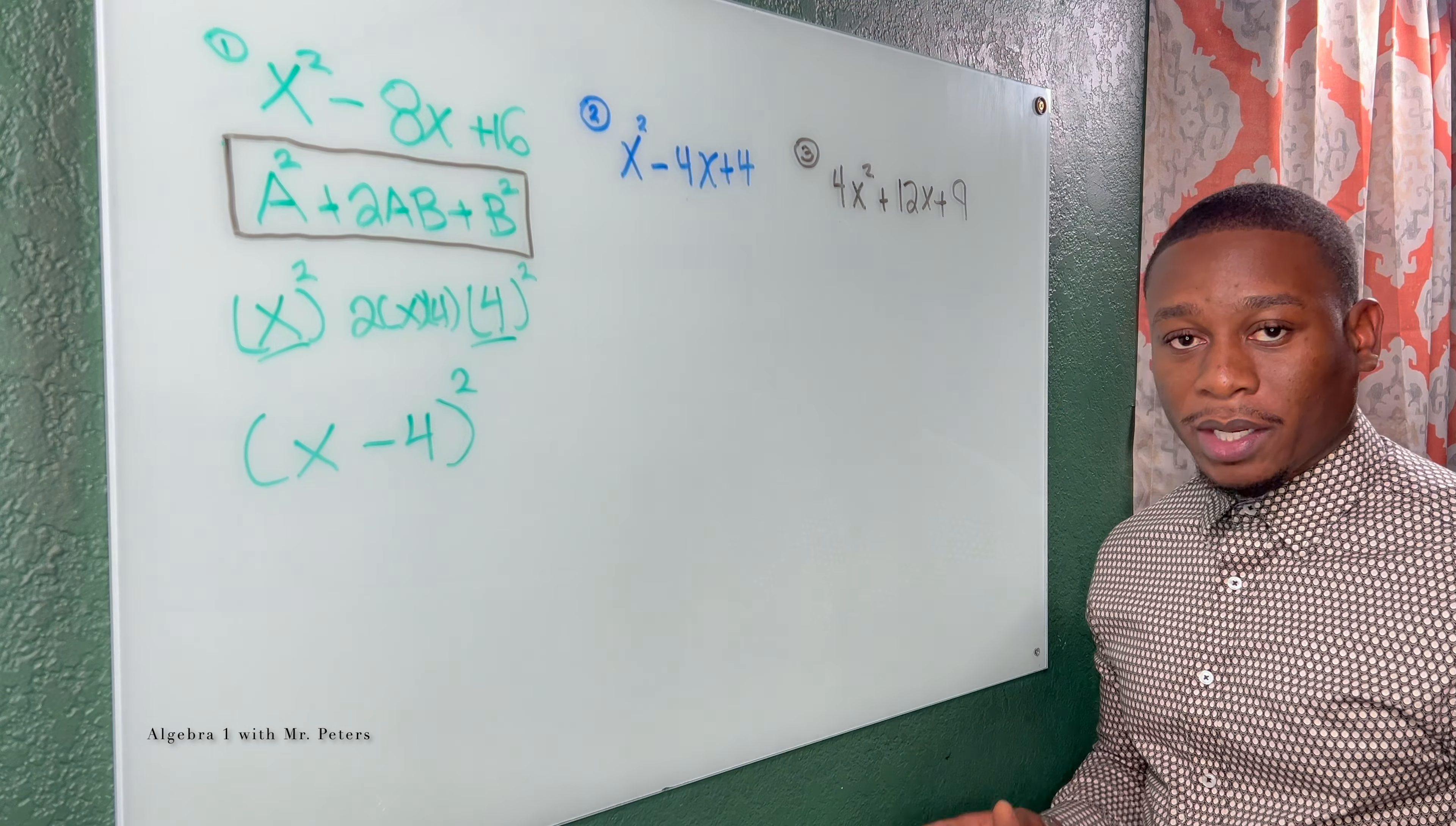So x times x gives us x squared. x times negative 4 is negative 4x. Now we go to 4 and distribute. Negative 4 times x is negative 4x again and negative 4 times negative 4 is positive 16. When we combine our like terms in the middle, that will give us that trinomial. So we know we factored correctly and that is our perfect square trinomial factor: x minus 4 squared.